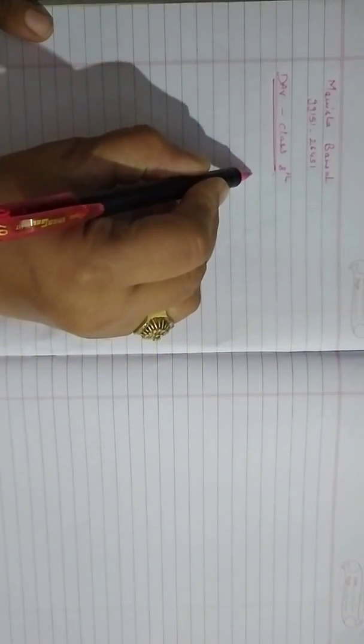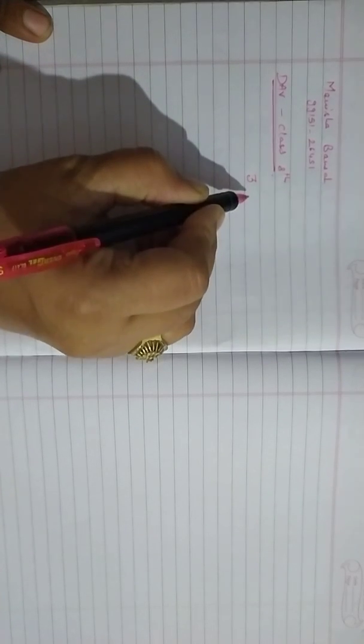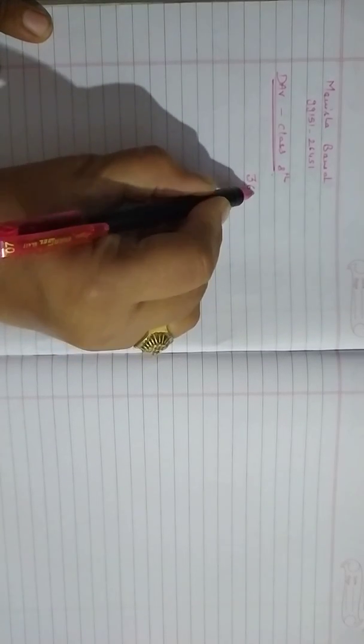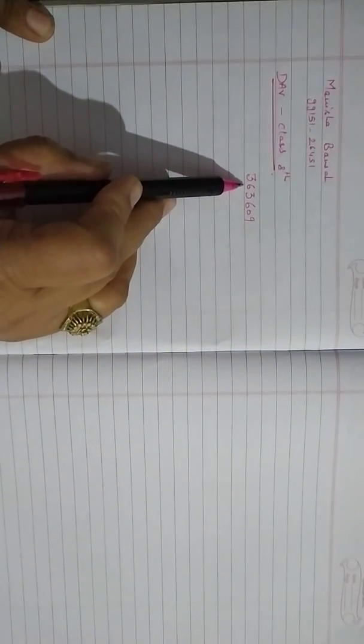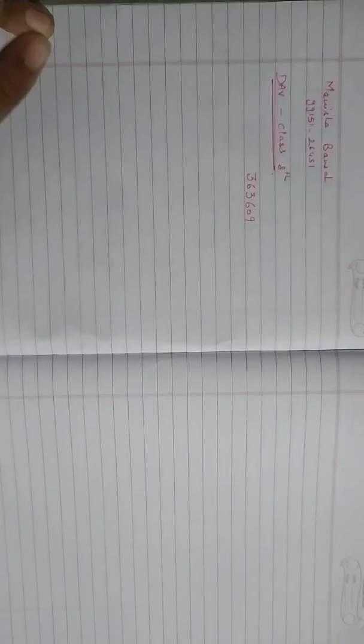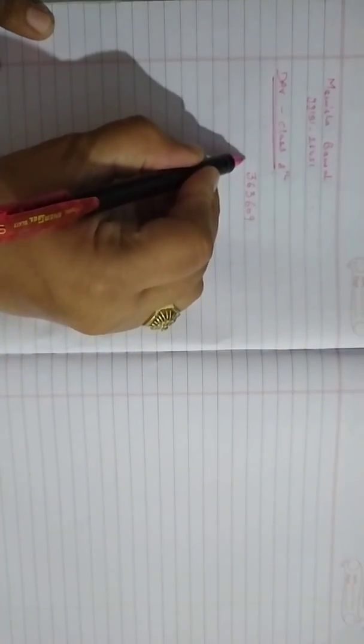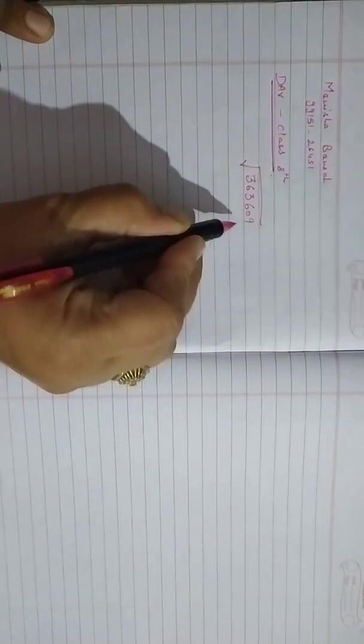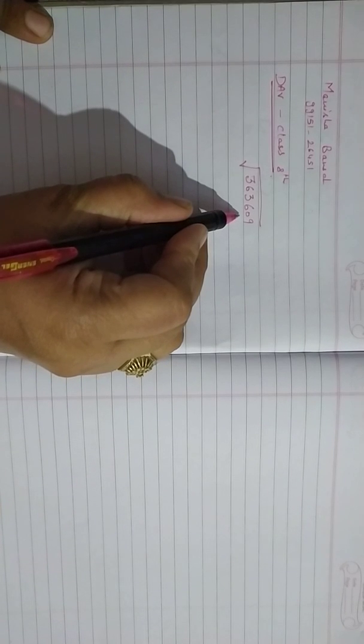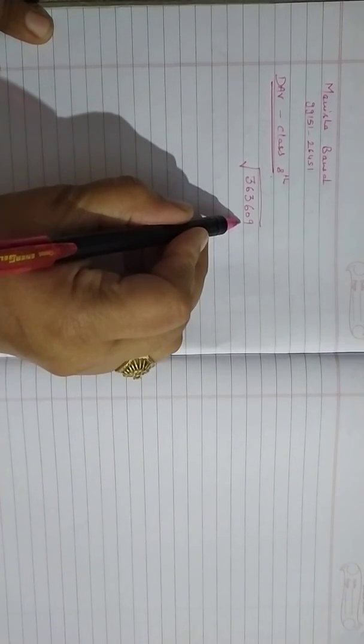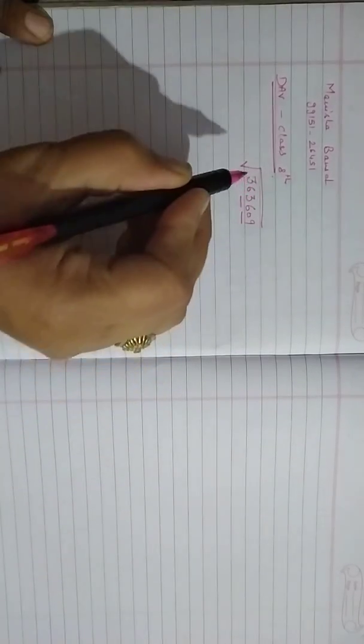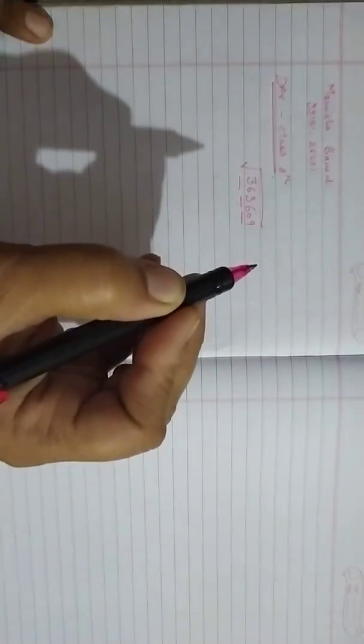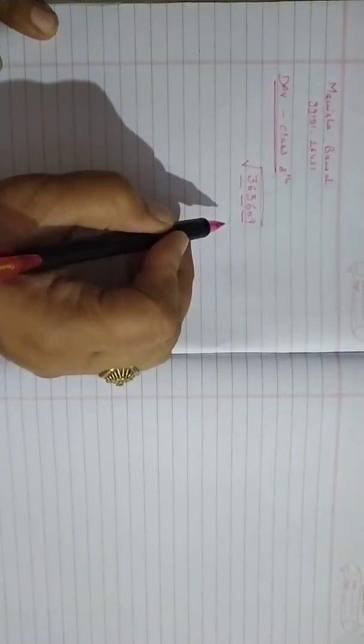The first sum which I am getting from most of the students is the square root of 363,609. Let us start. First of all, let us start to make the pairing. You know we have to start the pairing from the ones digit in this way. Now first of all, first pair is 36.